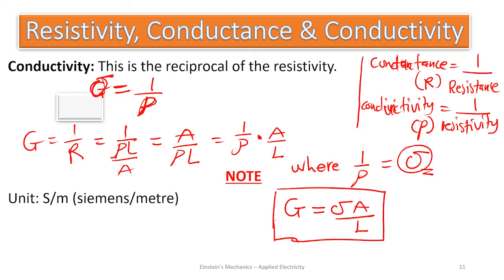So we talked about resistivity, conductance, and conductivity. Conductivity is the ability of a material to conduct electricity; resistivity is the ability of a material to resist the conduction of electricity. Thank you for watching this episode. Check out the next episode where we look at Kirchhoff's current law and some calculations. Please share the video, subscribe to the channel, like and comment — thank you.